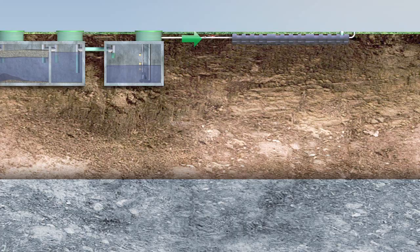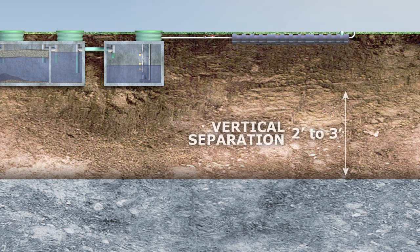Pressurized systems may be used where sufficient soil is present but the wastewater needs to be pumped to a certain area of the property. Pressure systems are also used when the soil type requires a specific dosing, or when vertical separation is 2 to 3 feet. In Washington State, pressurized systems need at least 2 feet of vertical separation — 12 inches less than conventional — because of how a pressurized system distributes the wastewater.